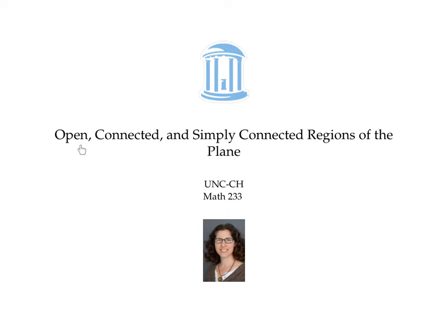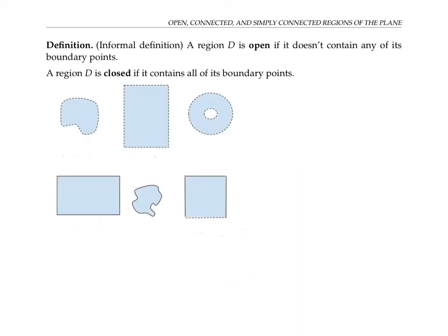This video defines open, connected, and simply connected regions of the plane. Informally, a region D is called open if it doesn't contain any of its boundary points. A region D is called closed if it contains all of its boundary points.